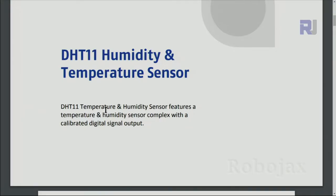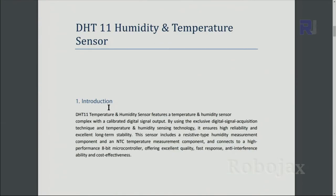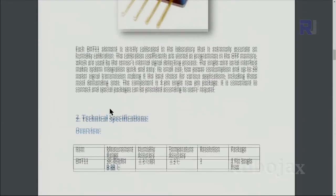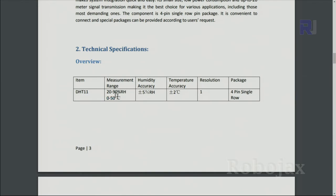This is the DHT11 humidity temperature datasheet. I'll provide you the link. A quick review shows that this can measure from 0 to 50 degrees Celsius. That is the limitation you have to know. The relative humidity percent is between 20 to 90 percent, and relative humidity percent accuracy is plus or minus 5 percent.